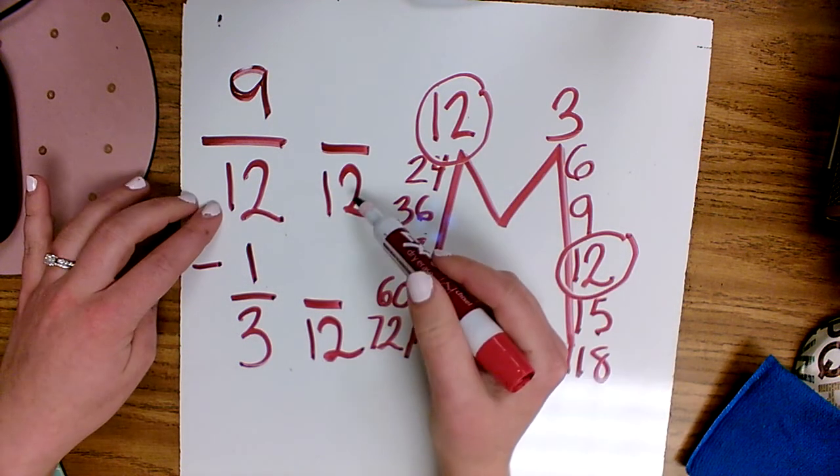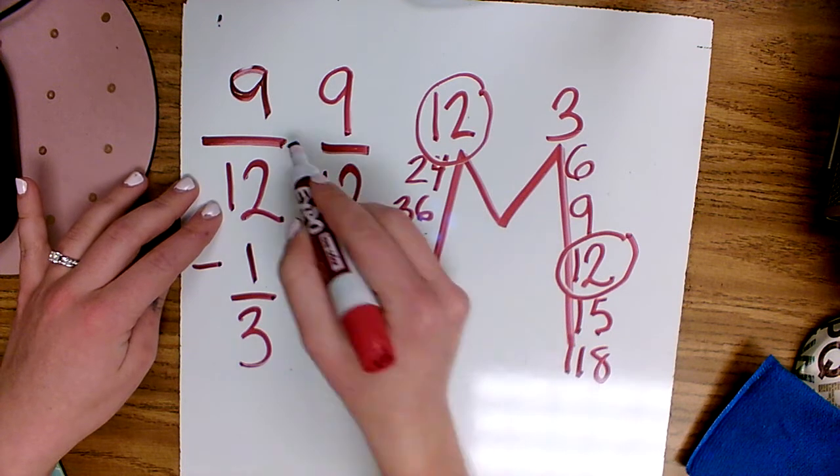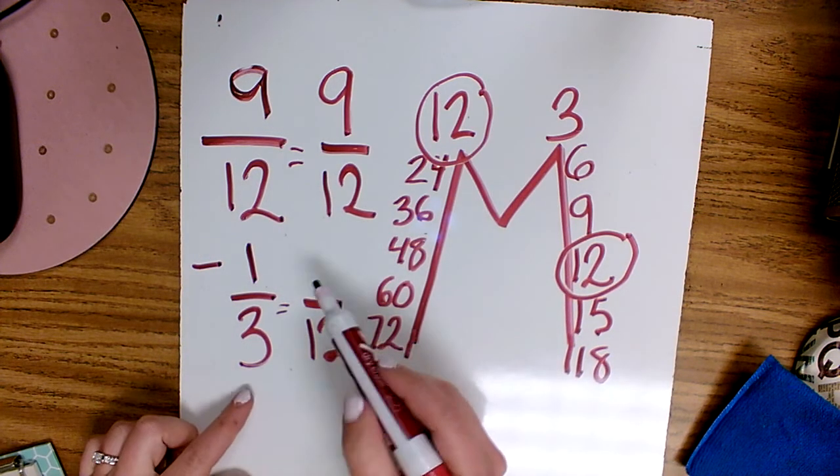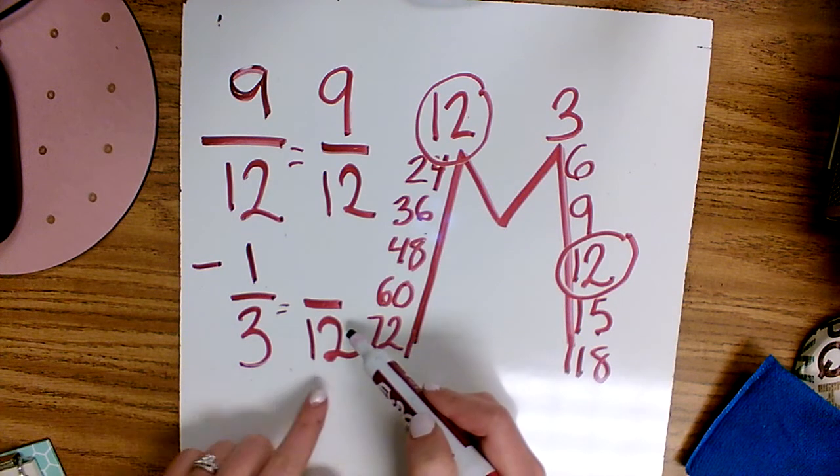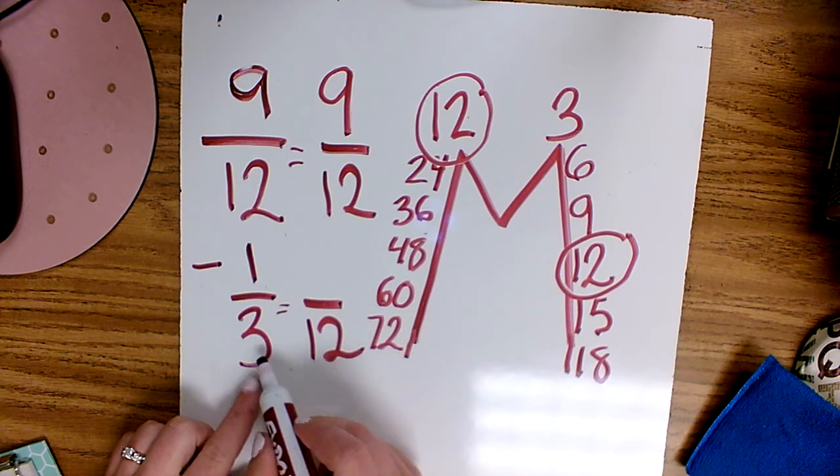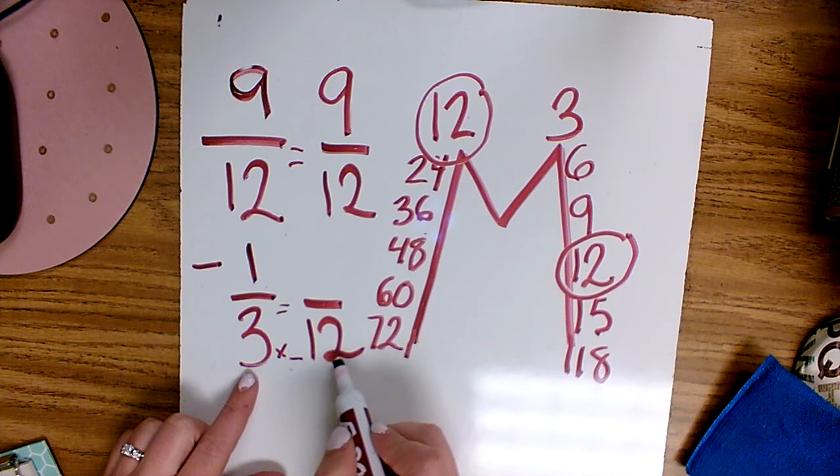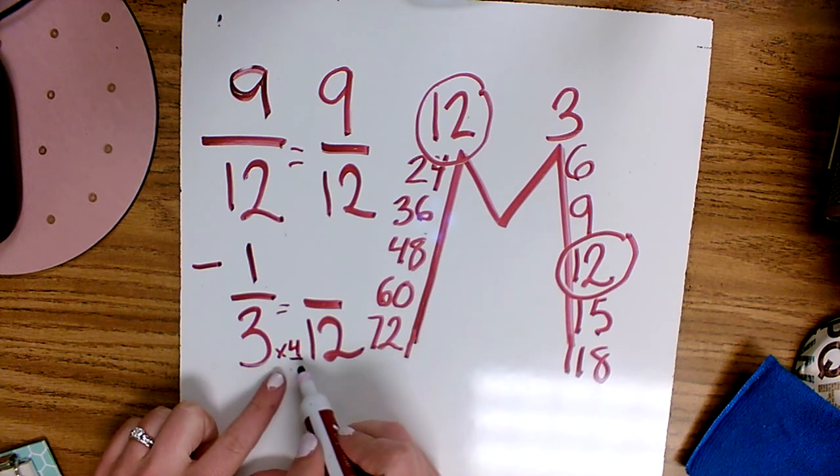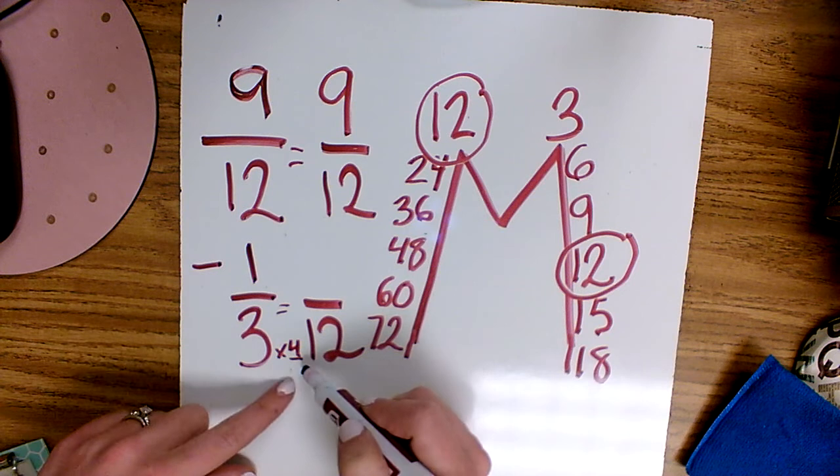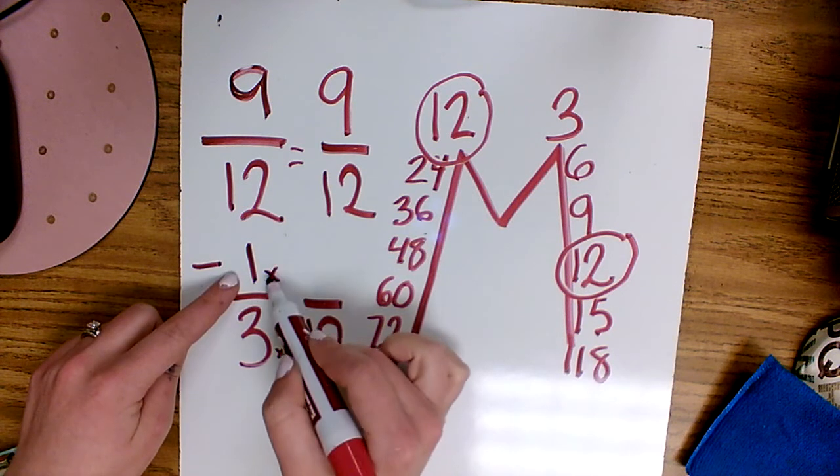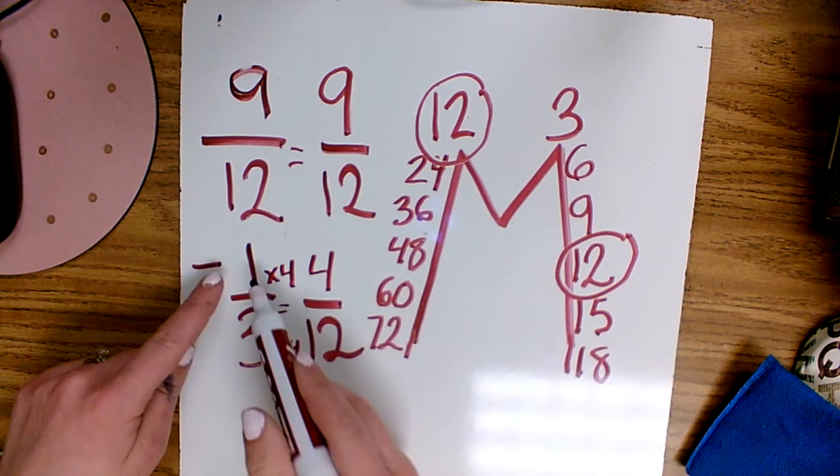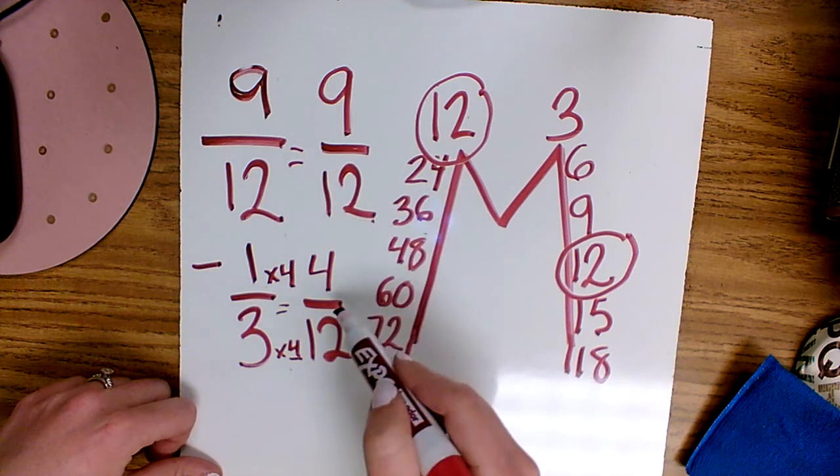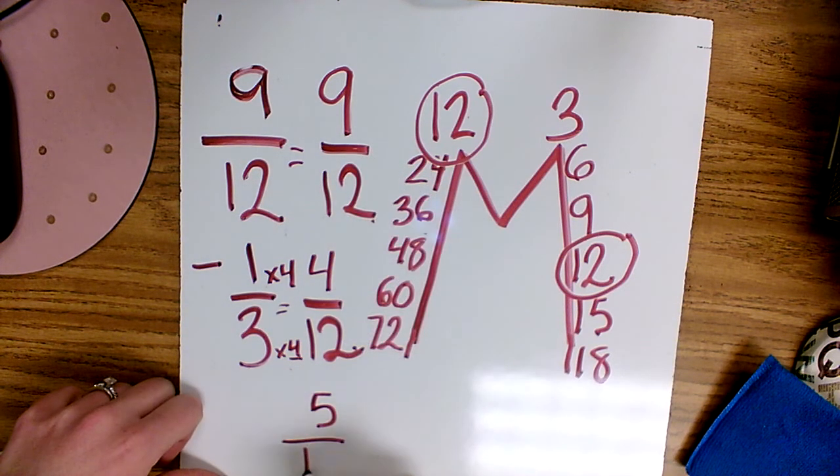Now this one already has twelve as the denominator, so I don't need to change anything with that fraction. It stays the same. In this fraction I have to figure out what my numerator is going to be to make one-third equivalent to a fraction of twelve. So I can figure out, okay, three times what is going to give me twelve? I know that three times four is twelve. And whatever I multiply the denominator by, I have to multiply the numerator by. So I multiplied three by four, now I'm going to multiply one times four. My new fraction for one-third is four-twelfths. They have a common denominator and now I can subtract. Nine-twelfths minus four-twelfths gives me five-twelfths.